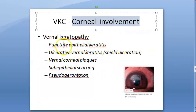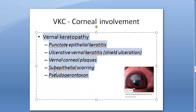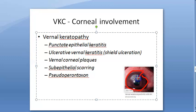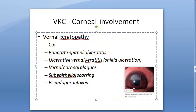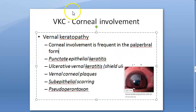Now we are looking at the clinical features — specifically the corneal involvement, vernal keratopathy. Basically, because of the limbal lesions which can extend, the cornea can also get involved. This is very frequent in the palpebral form of vernal keratoconjunctivitis, because the limbal lesions can extend into the cornea. There are five types of lesions: punctate epithelial keratitis, ulcerative vernal keratitis or shield ulceration, vernal corneal plaques, subepithelial scarring, and pseudogerontoxon.